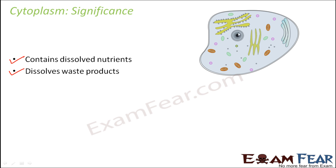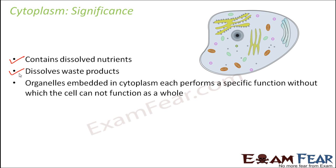Cytoplasm also dissolves waste products. Each organelle performs its specific function, and the waste materials produced are released into the cytoplasm, which dissolves them. Each organelle embedded in cytoplasm performs a specific function without which the cell cannot function as a whole. Cytoplasm acts as a common workplace for all organelles — like an office where 10 employees come to work together. If any organelle, such as mitochondria, stops functioning, the cell will not function correctly.